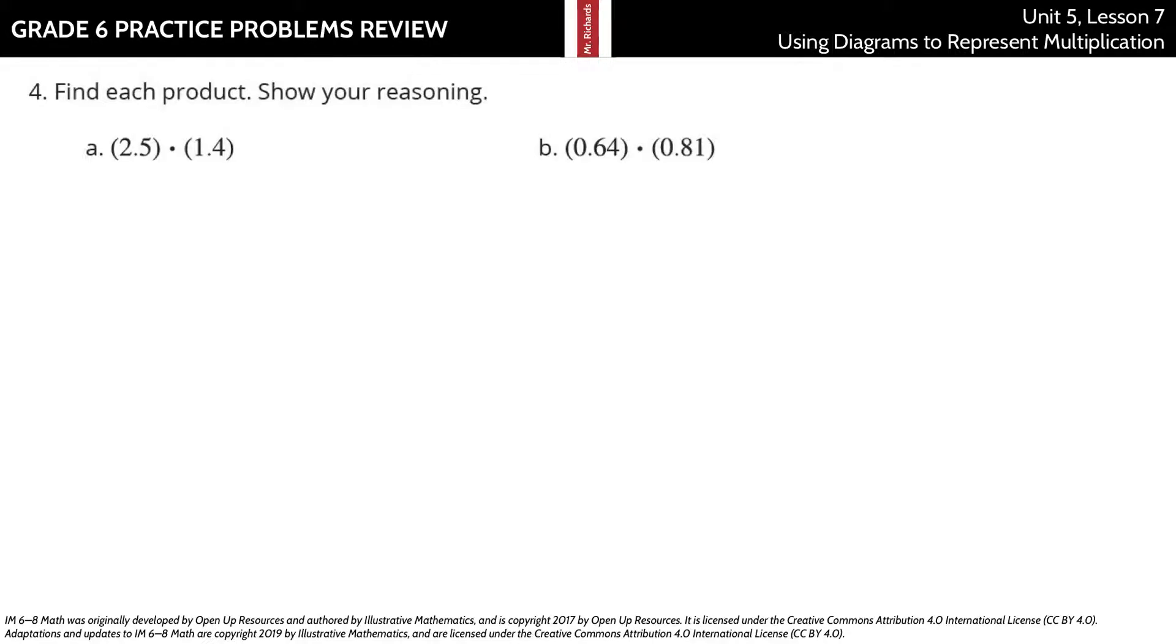Find each product, show your reasoning. We have 2.5 times 1.4. If I call that 25 tenths times 14 tenths, it might require me to take 25 times 14 on the side, which is just fine. 5 times 4 is 20, 4 times 2 is 8 plus 2 is 10, 1 times 5 is 5, 1 times 2 is 2. Add those up, get 350.